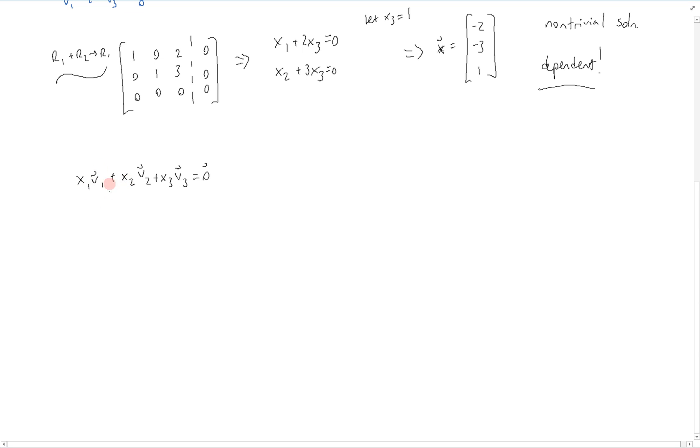So we can replace those values in this equation. And we get negative 2x3 times v1, plus negative 3x3 times v2, plus x3v3 is equal to zero.